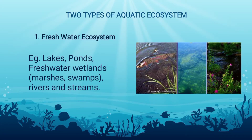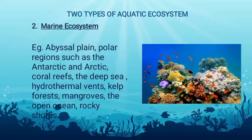There are two types of aquatic ecosystems. First is the freshwater ecosystem, and it includes lakes, ponds, freshwater rivers, and streams. The second one is the marine ecosystem. It includes the abyssal plain, areas like deep sea coral, whale falls, and brine pools.